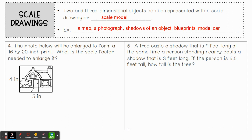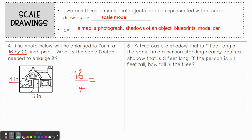Number four: A photo will be enlarged to form a 16 by 20 inch print. What is the scale factor needed to enlarge it? We go back to what we did in the last lesson. Since 16 is smaller than 20, we'll correspond it with the smaller original side of four. Going from 4 to 16: new over original is 16 over 4. Simplifying, we get a scale factor of 4. So we're enlarging every aspect of the picture to four times the original.